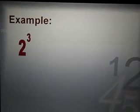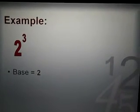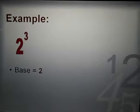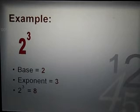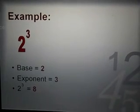Okay, now let's see if you got it right. The base in this example is the number 2, the exponent is the number 3, and 2 to the third equals 8.